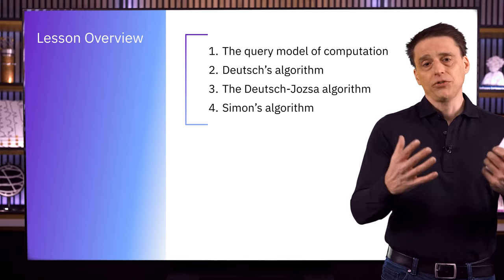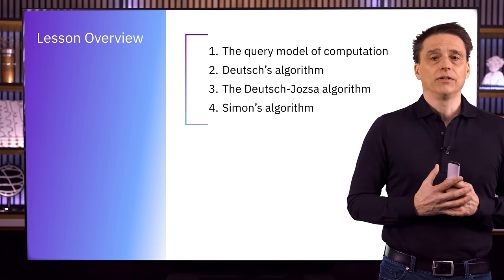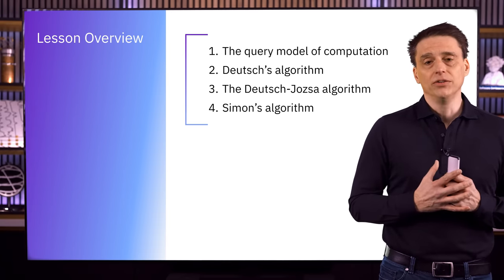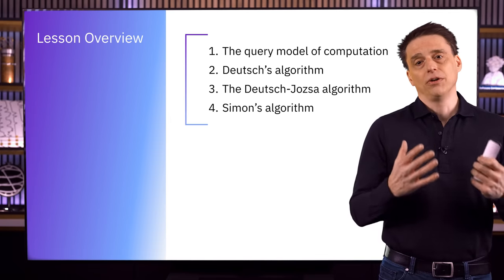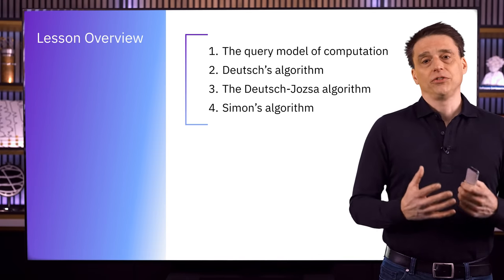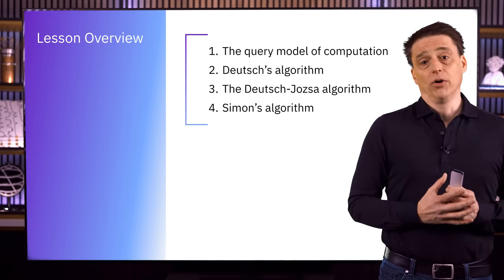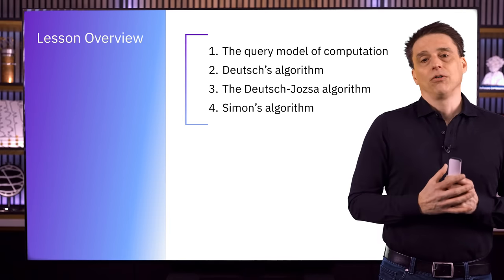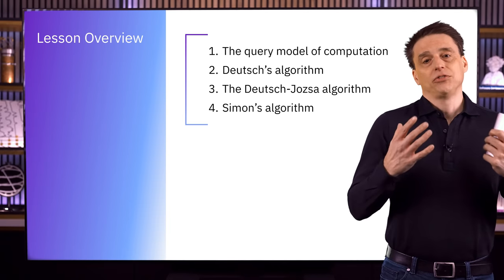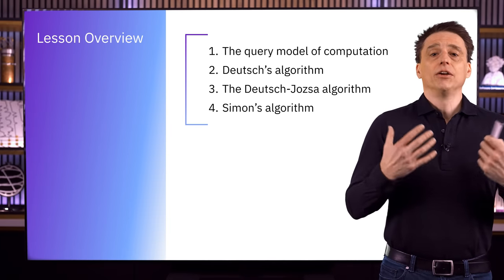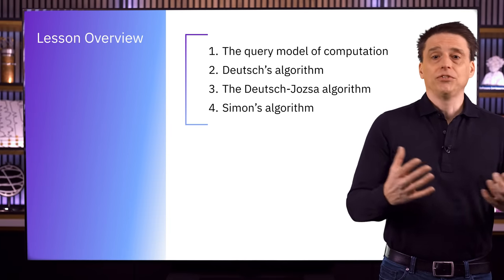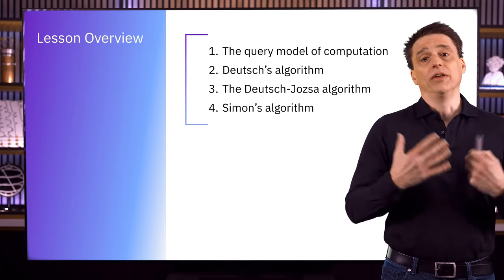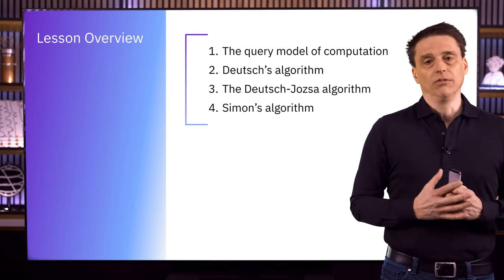In the first section of the lesson, we'll look at specifically what the query model of computation is. In the second, third, and fourth sections, we'll discuss three quantum query algorithms: Deutsch's algorithm, the Deutsch-Jozsa algorithm, and Simon's algorithm, which reveal increasingly impressive advantages of quantum computers over classical computers within the query model of computation.